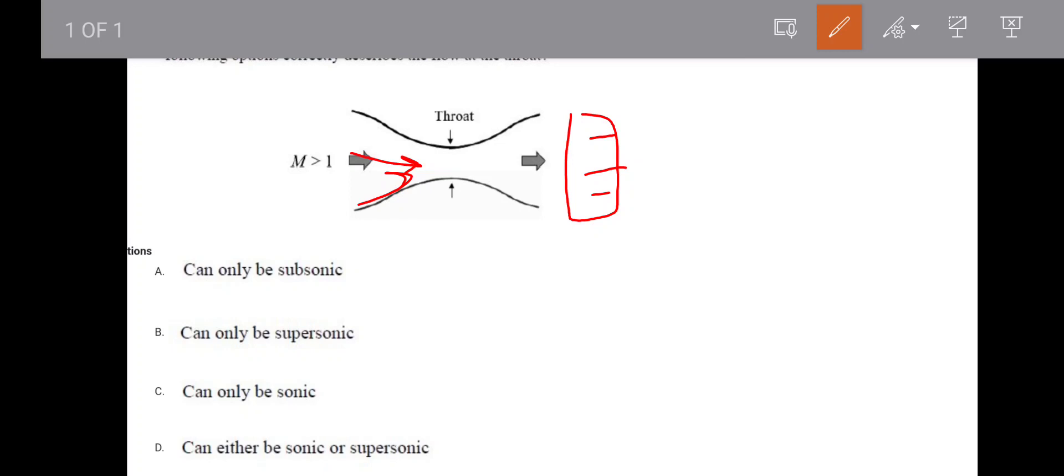And what if supersonic flow crosses the throat, then again it is having expansion, so again it will accelerate. So it means what? There can be a situation that supersonic flow is coming and here it did not reach 1. Then it will further expand and it will further become supersonic.